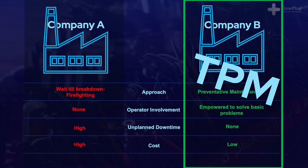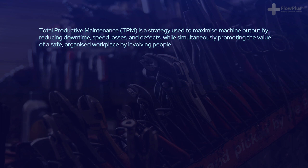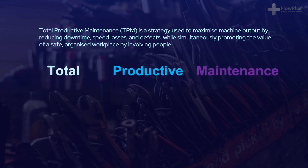Throughout this module we will refer back to this example to help relate to the concepts of TPM in a real-world situation. TPM, Total Productive Maintenance, is a strategy used to maximise machine output by reducing downtime, speed losses and defects, while simultaneously promoting the value of a safe, organised workplace by involving people. Remember the definition of lean: to reduce waste, increase customer value and involve people. This definition is somewhat replicated in TPM as a means to reduce the waste of waiting by involving people.